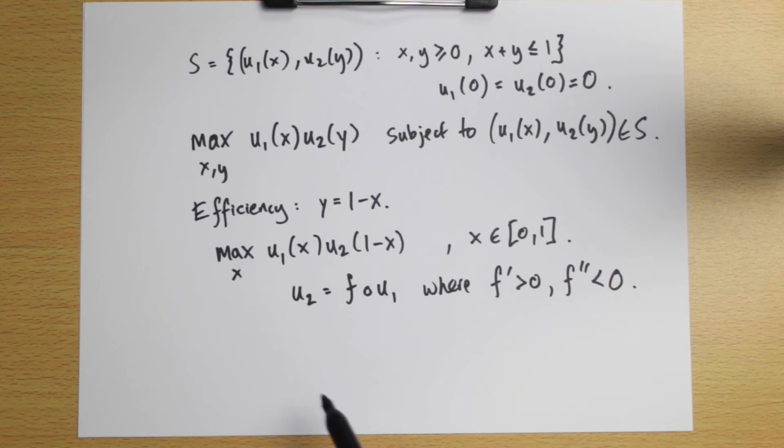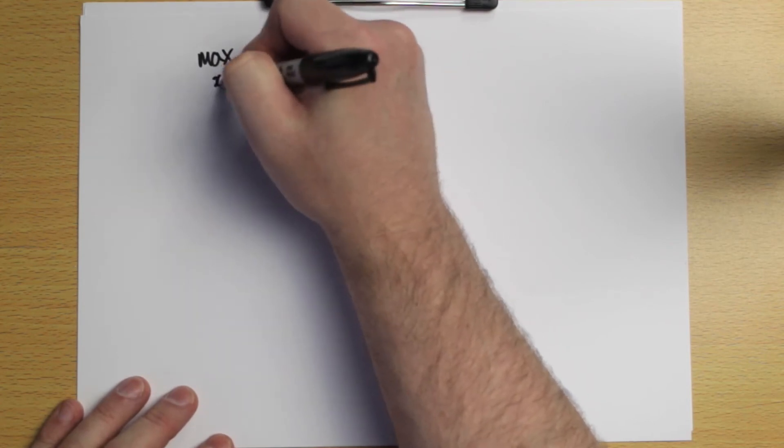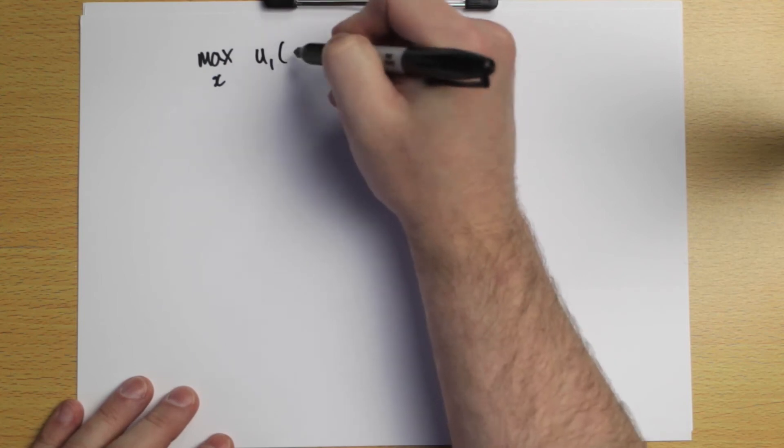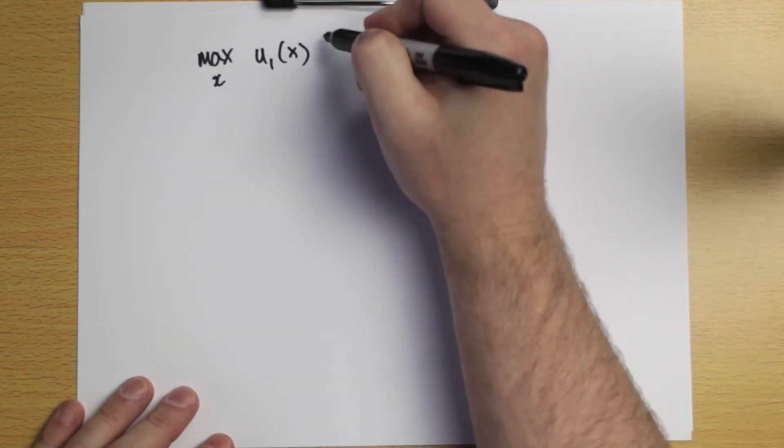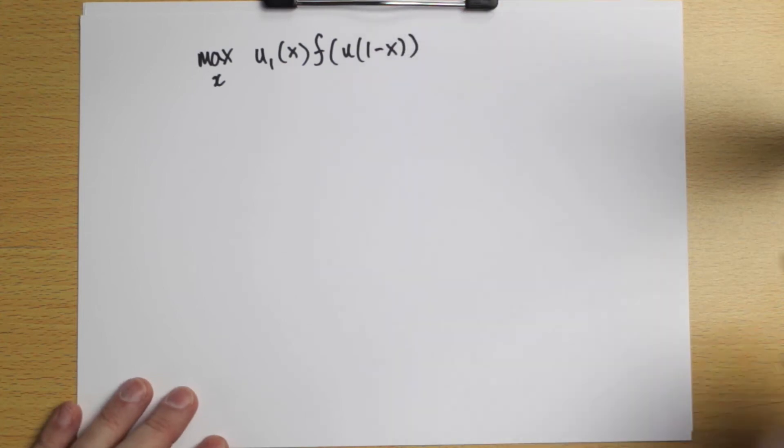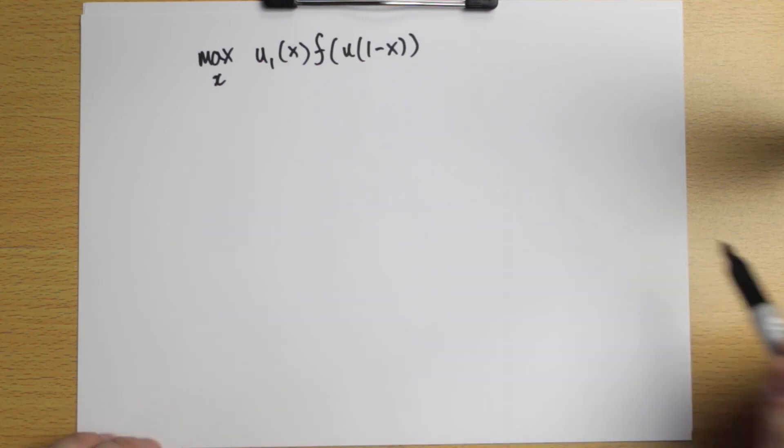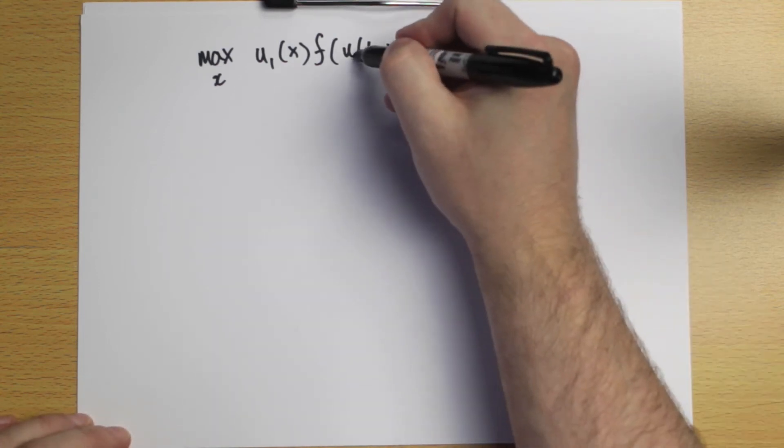So now we have, we can rewrite our problem, replacing U2 by this composition, F composed with U1. So let's rewrite the problem. To find the Nash solution for this problem, we're going to maximize by choosing an amount X the Nash product, the utility for player one of the amount X, multiplied by the utility for player two, which is F of U of one minus X. So if we find the X that maximizes this Nash product, then we've found the Nash bargaining solution for this problem. We won't be able to pin it down exactly because these utility functions are very general, that should be U1 there.